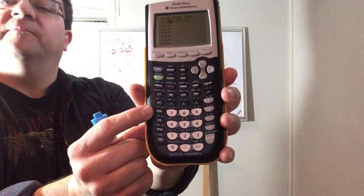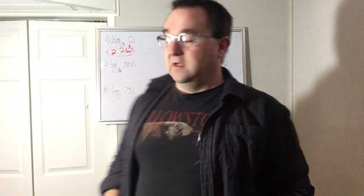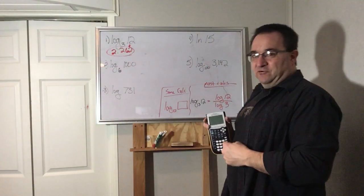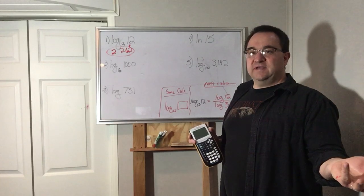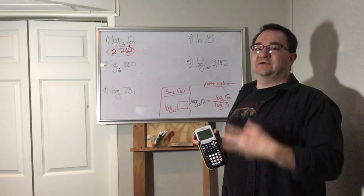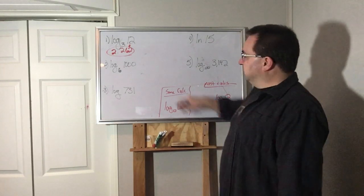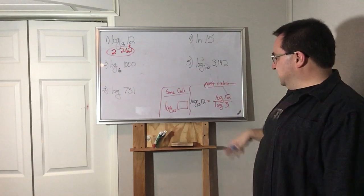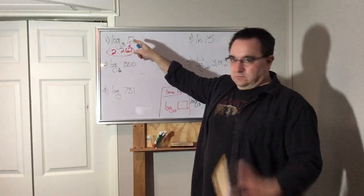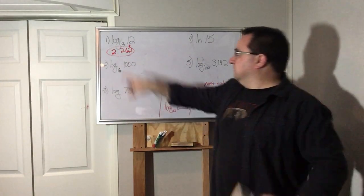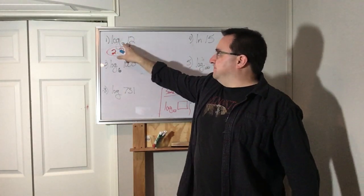And the reason why I want to do that is because every scientific calculator, non-graphing ones included, has a logarithm button on the screen. Can you see that right there on the board? So it does not have a log base 3 button, it does not have a log base 8 button, but it does have a regular log button.